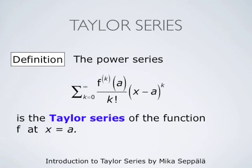Instead of considering power series in powers of x, we may consider power series in powers of the term x minus a. If a function f is infinitely many times differentiable, then we may form the series summation k from 0 to infinity of the kth derivative of f at a divided by k factorial times x minus a to the power k. Such a series is called the Taylor series of the function f at x equals a. For a wide class of functions under very general conditions, this Taylor series converges and can be used to study the function near the point a.